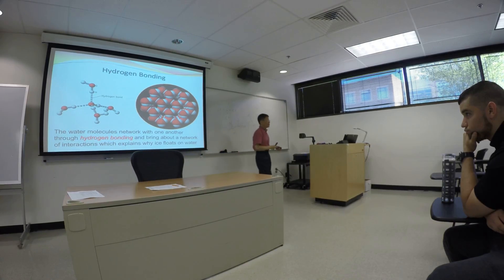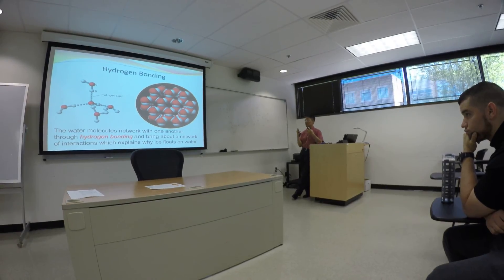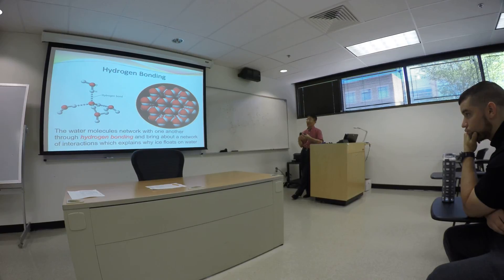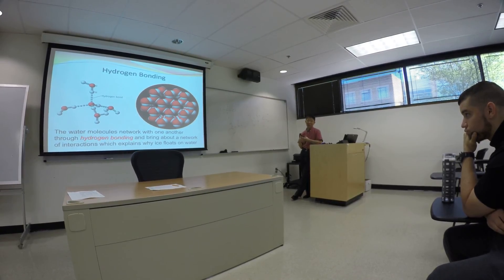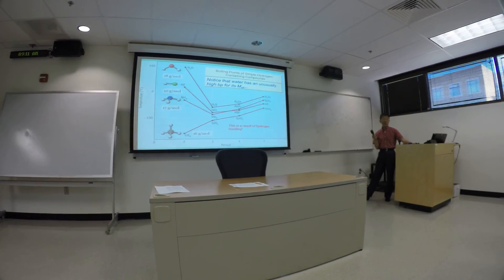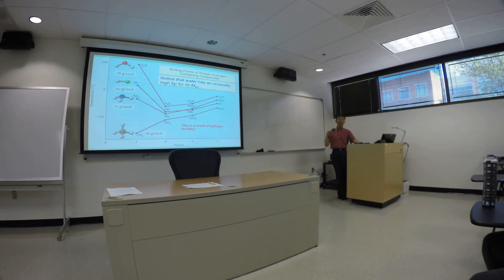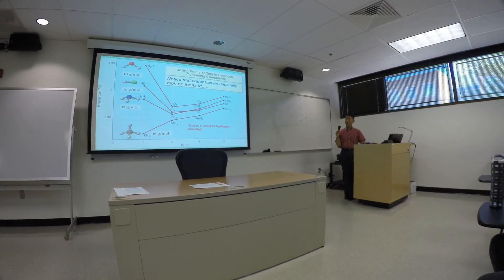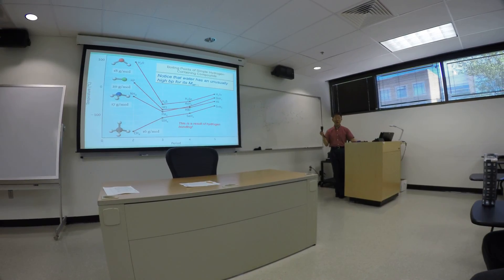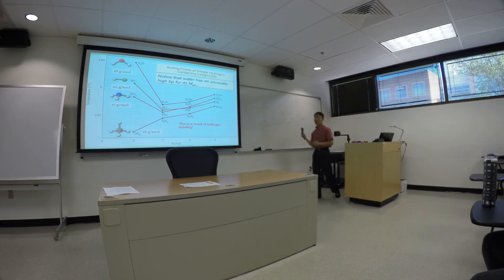So hydrogen bonding can be used to explain the lower density of ice, simply because the water molecules take up more room. When the temperature is lower, the volume increases, and increasing the volume with the same mass results in a lower density. Another thing to look at is the boiling point trend. Within the same group of elements, as those elements combine with an identical other type of atom, the molar mass increases and the boiling point should be increasing.